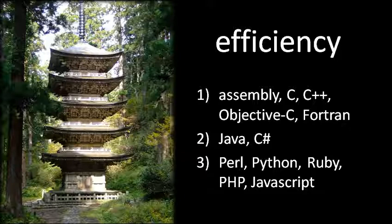So in practice, in terms of execution time, while Assembly, C, and similar languages are the fastest, Java and C# tend to be in the same ballpark, though very often maybe five or six times slower. And then in the bottom tier, the languages at best are maybe ten times as slow, if not often a hundred times as slow.